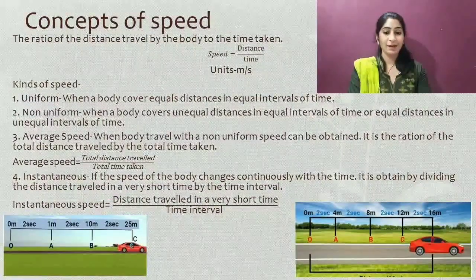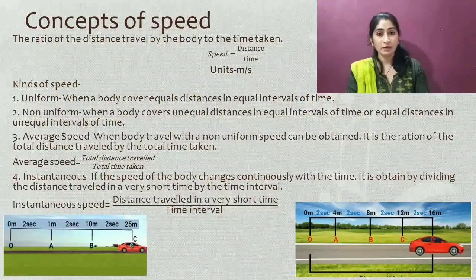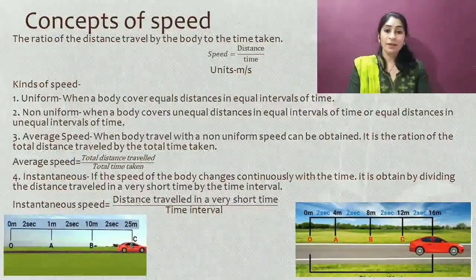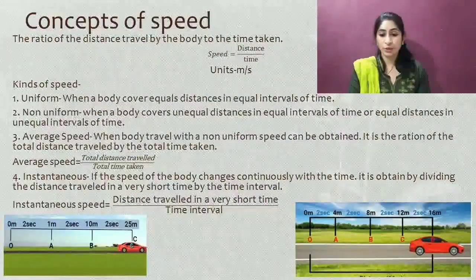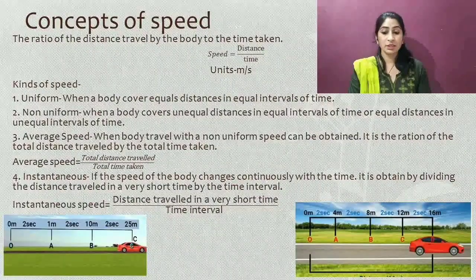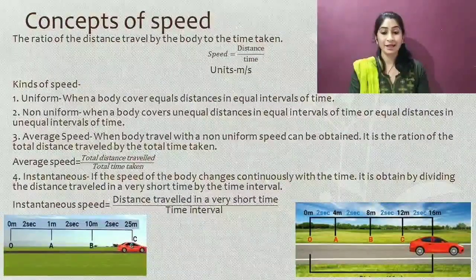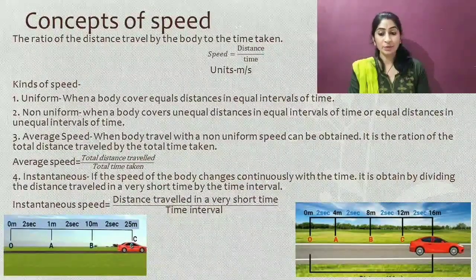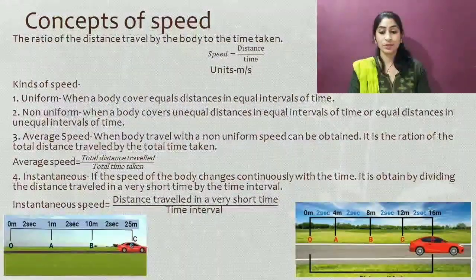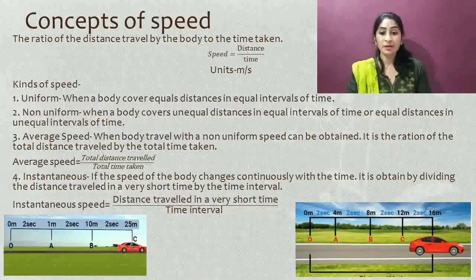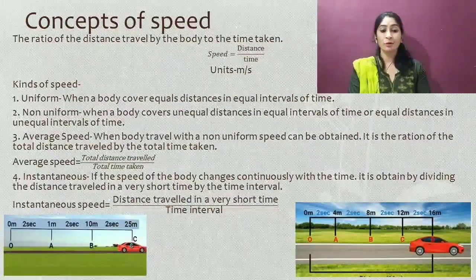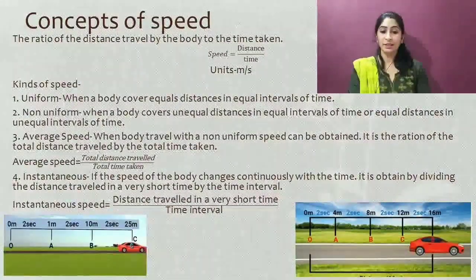The next type is non-uniform speed. When a body covers unequal distance in equal intervals of time, or equal distance in unequal intervals of time, it is in non-uniform motion. As seen in the second diagram, the car covers one meter in the first two seconds from point O to A. In the next two seconds the distance traveled is ten meters. In the following two seconds it covers another unequal distance. Since the time interval is the same but the distances are unequal, the body is in non-uniform speed.